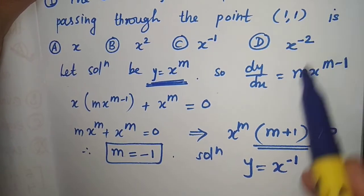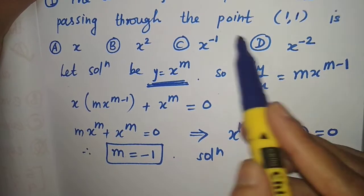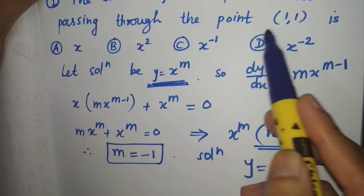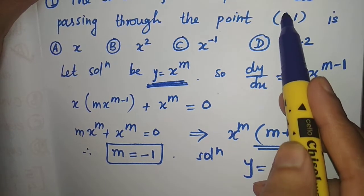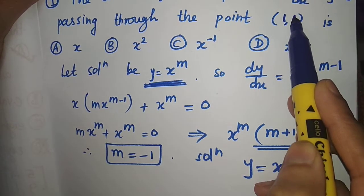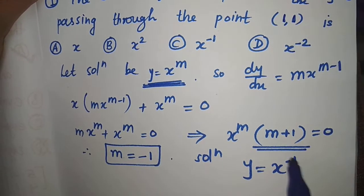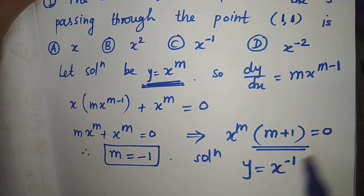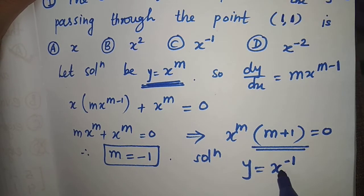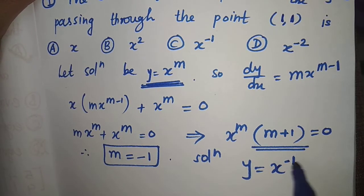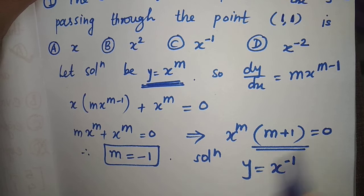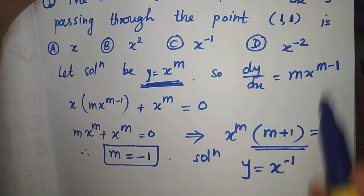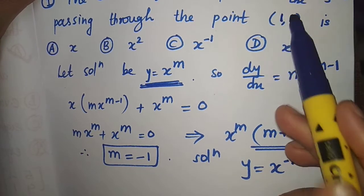So the solution is y equal to x raised to minus 1 because m is minus 1. This solution also satisfies the initial condition: when x is equal to 1, we get y equal to 1, because 1 raised to minus 1 is 1 upon 1, which is 1. So y is 1.